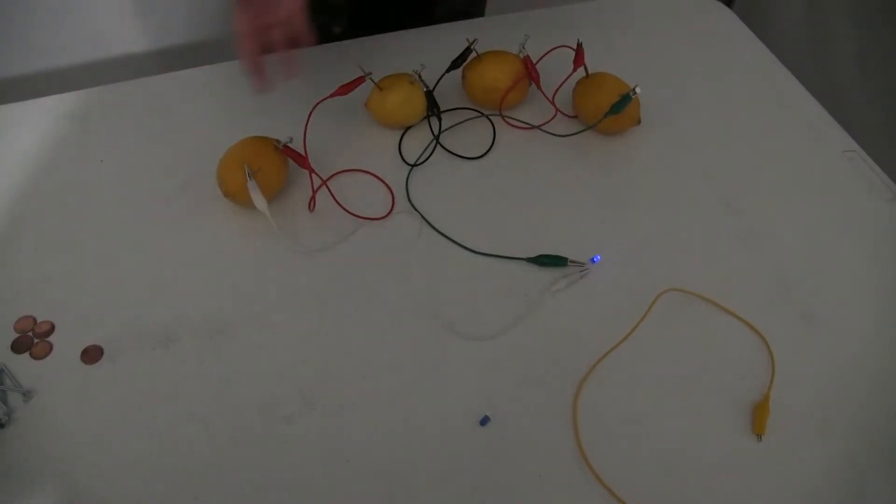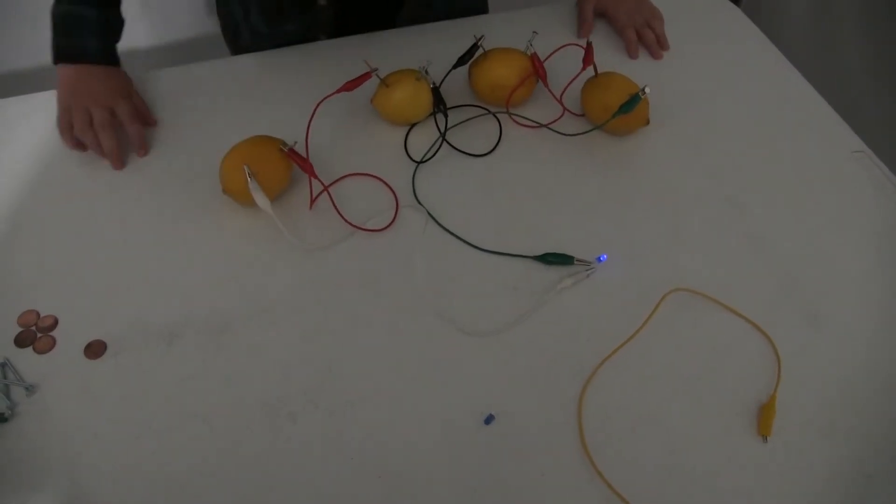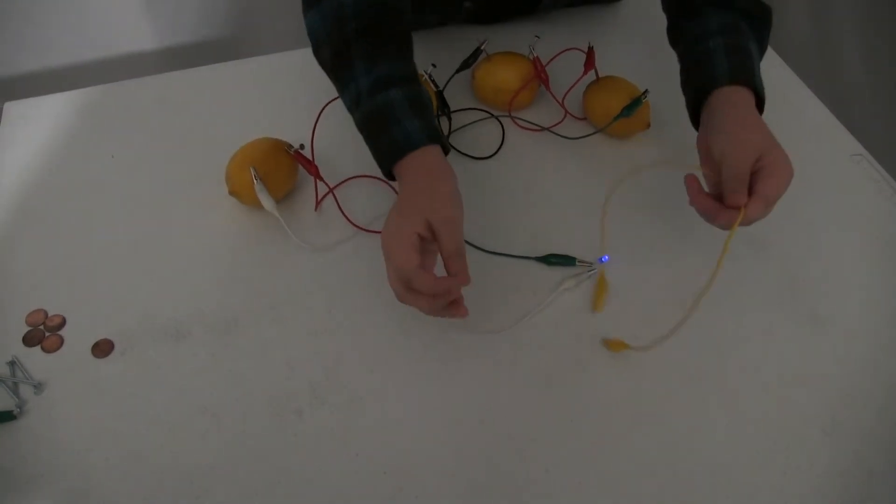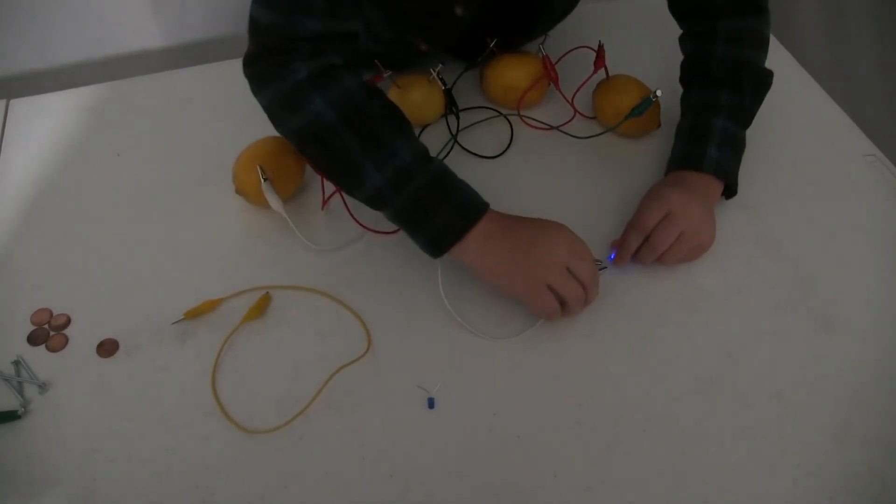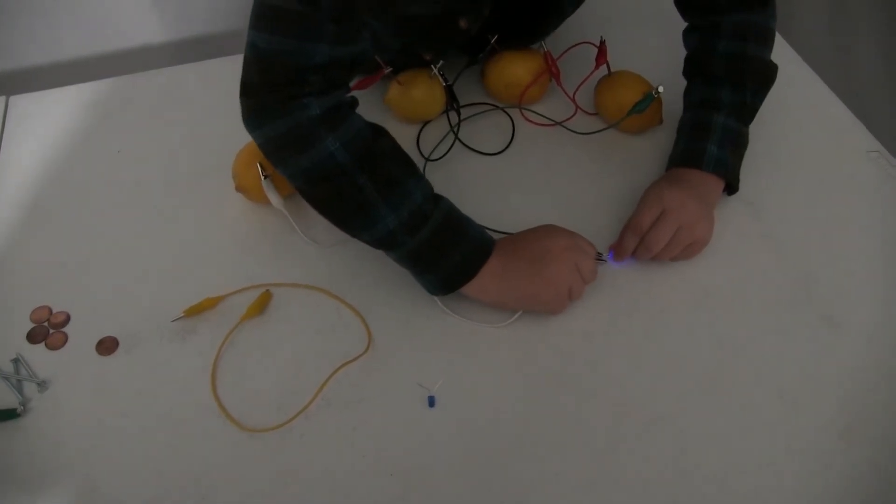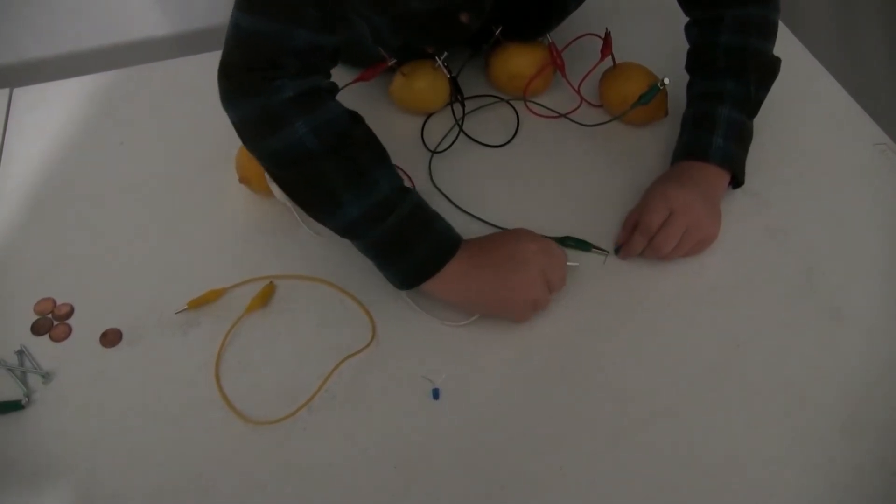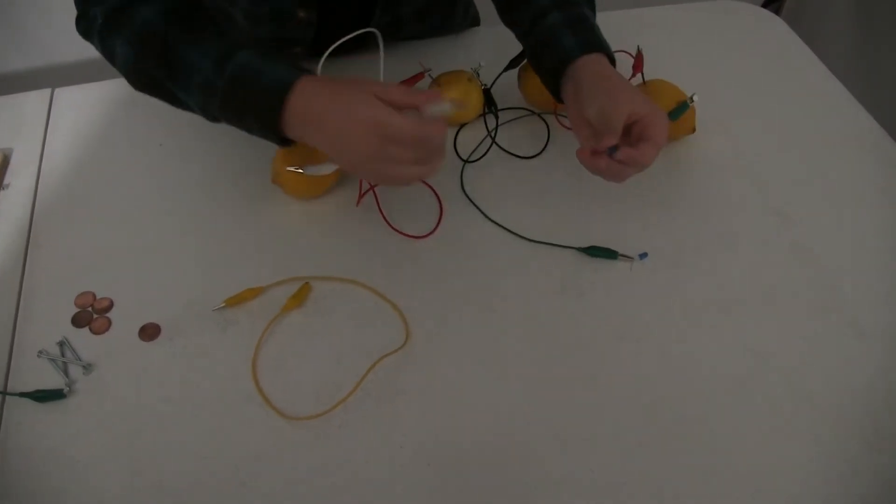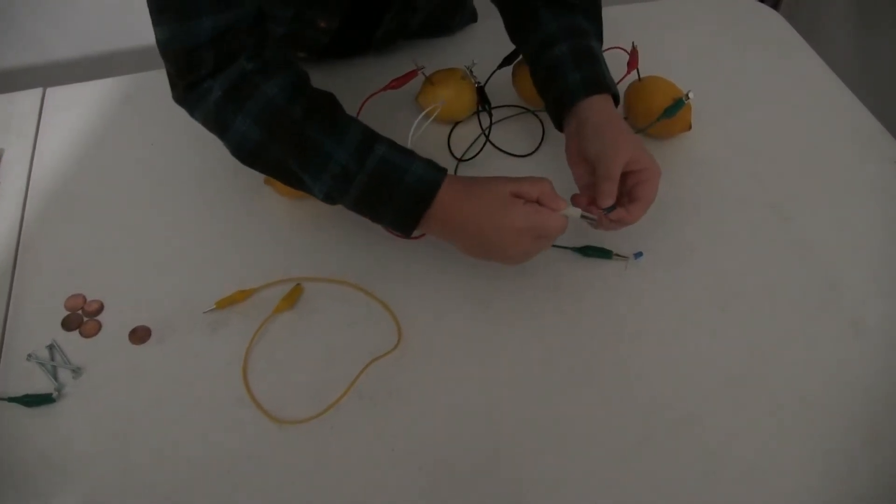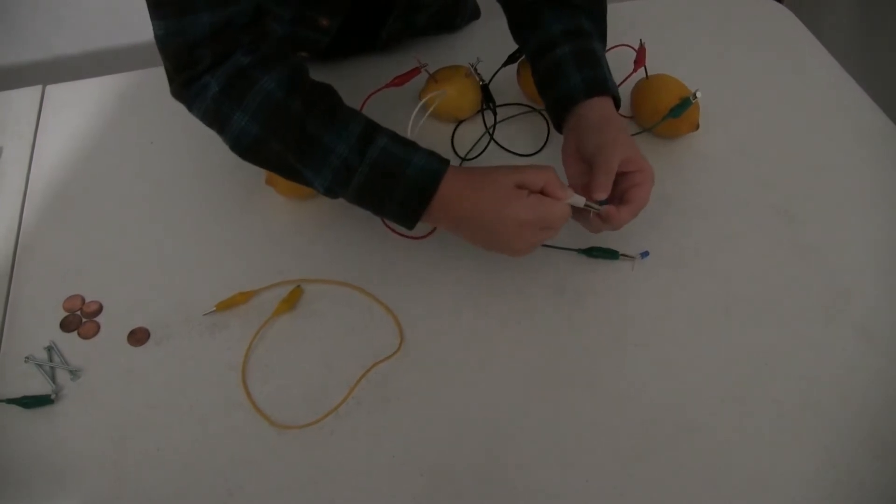So, after we made our circuit, now we're going to make a series circuit. And all you have to do is get one more alligator clip and one more LED bulb. Now you're going to detach one alligator clip. As you can tell, it turned off because it's not complete yet. And now we're going to add this to the second LED.